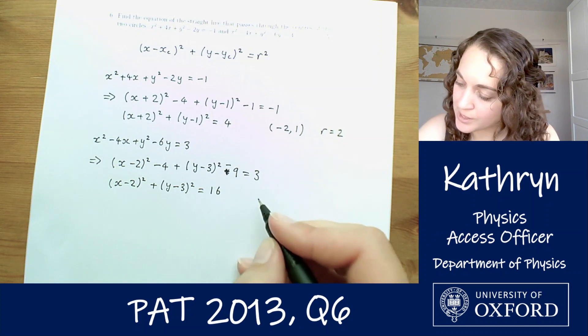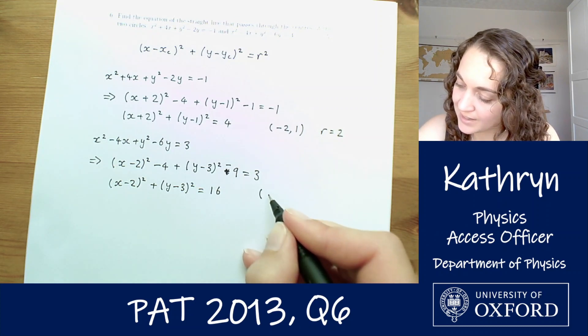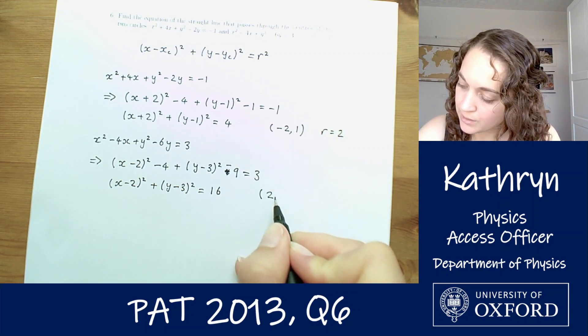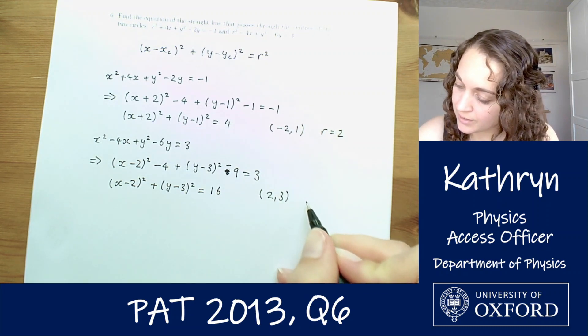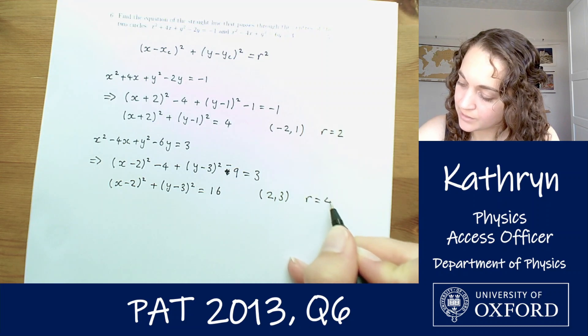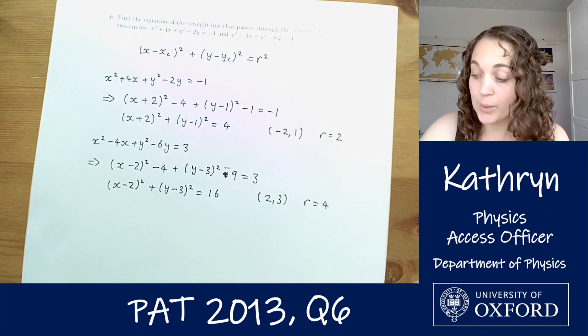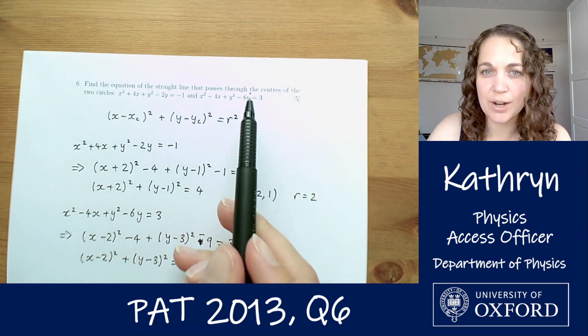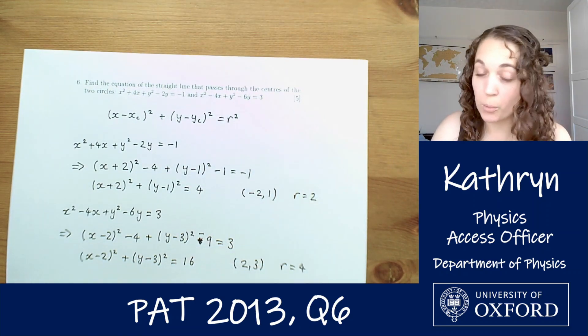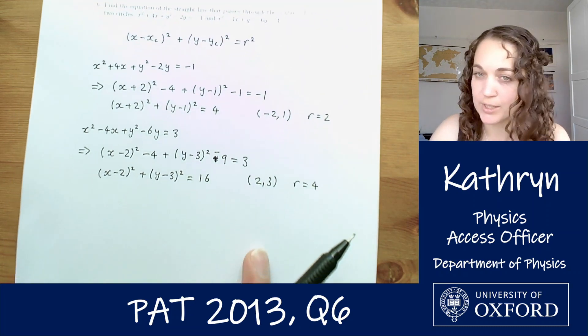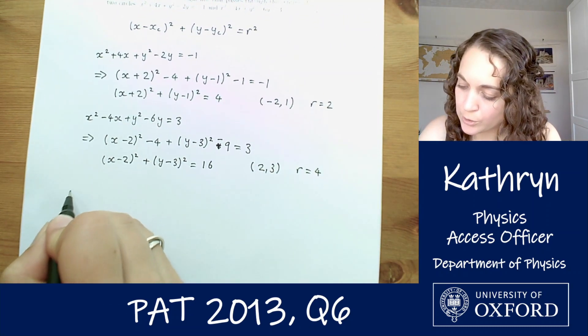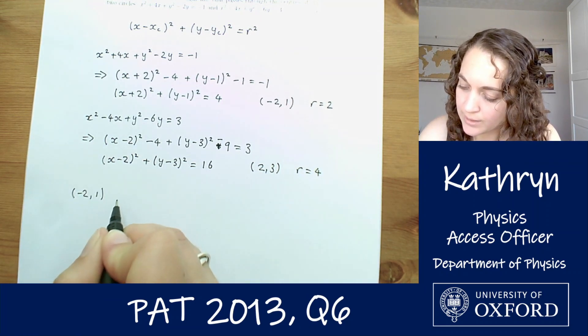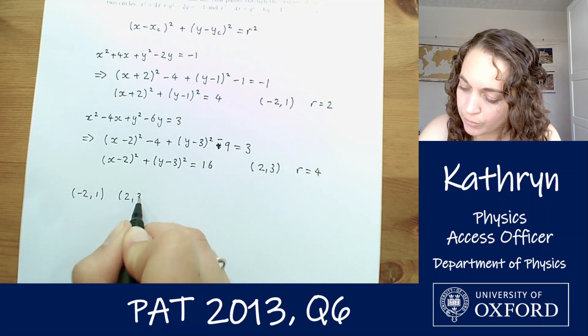So we've now got another circle, this one is centred at x equals 2, y equals 3, and our radius is 4. So we now know the centres of these two circles, the question asked us to find the equation of the straight line that passed through those. So our two points are minus 2, 1, and 2, 3.